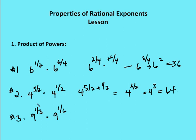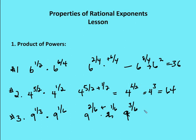Next problem: 9 to the 1 third times 9 to the 1 sixth. I convert 1 third to 2 sixths, then add 2 sixths plus 1 sixth to get 9 to the 3 sixths, or 9 to the 1 half. 9 to the 1 half is the same as the square root of 9, which is equal to 3.